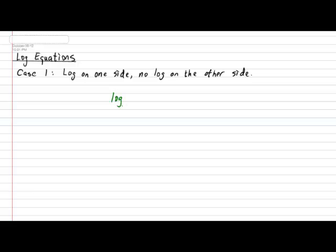Suppose I have the equation log in base c of an unknown x is equal to n, and our job is to figure out what the x value is. It's actually a lot easier than you might think. All we have to do is go back to the most basic definition of what a log means. Log in base c of x is equal to n, and rewriting it in exponential form, we get that c to the exponent n gives back our x. The x is isolated, and we accomplish this simply by relying on the definition of a log.